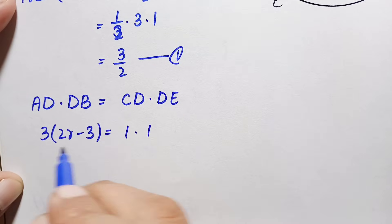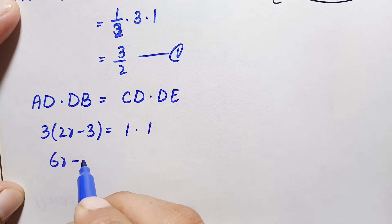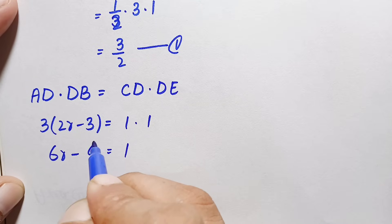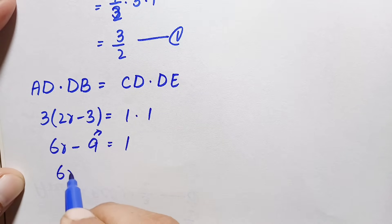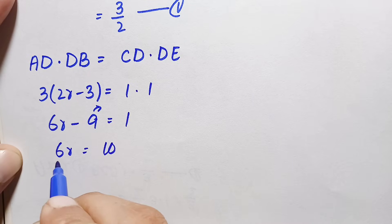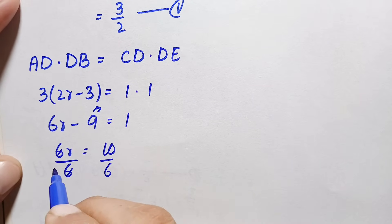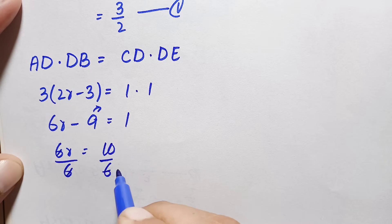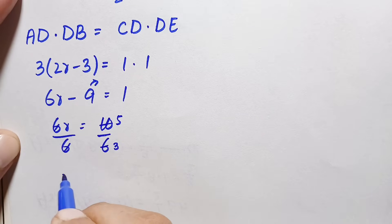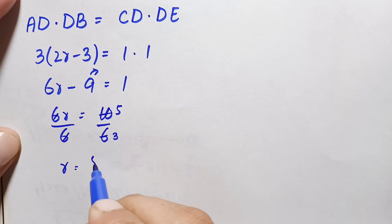Substituting these values: 3 times (2r minus 3) equals 1 times 1. Expanding gives 6r minus 9 equals 1. Moving 9 to the right hand side: 6r equals 10. Dividing both sides by 6 and simplifying by dividing numerator and denominator by 2, the radius r equals 5/3.